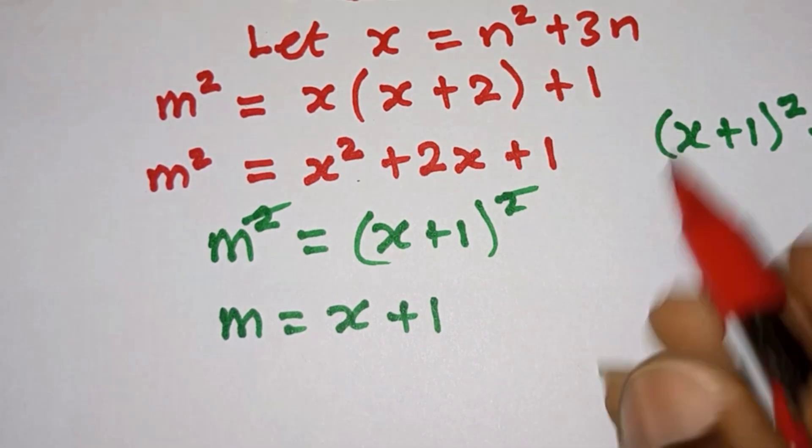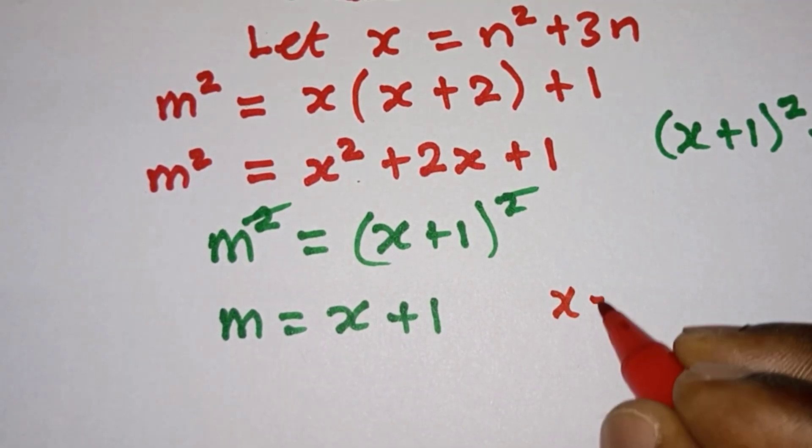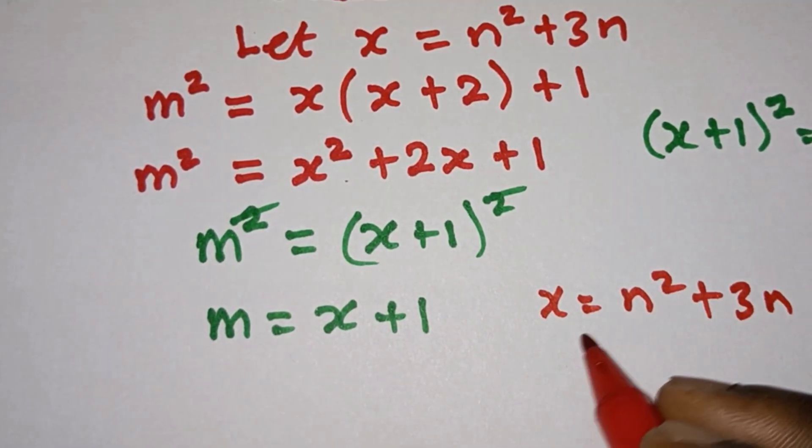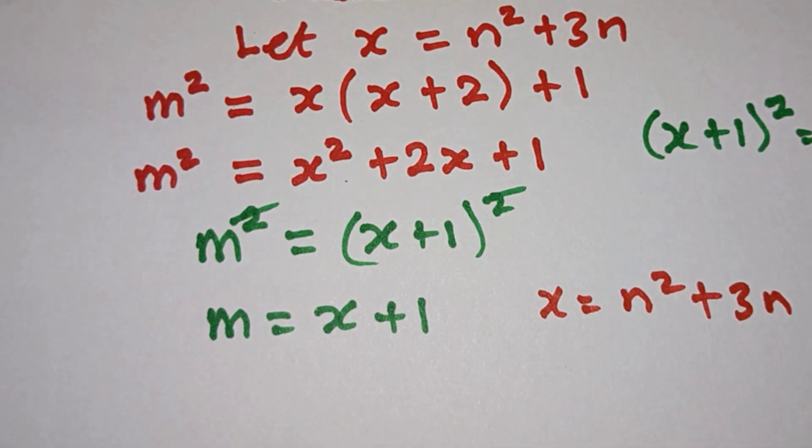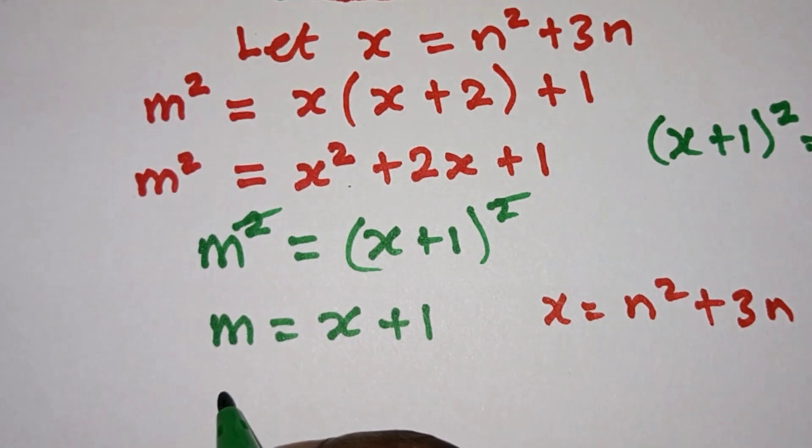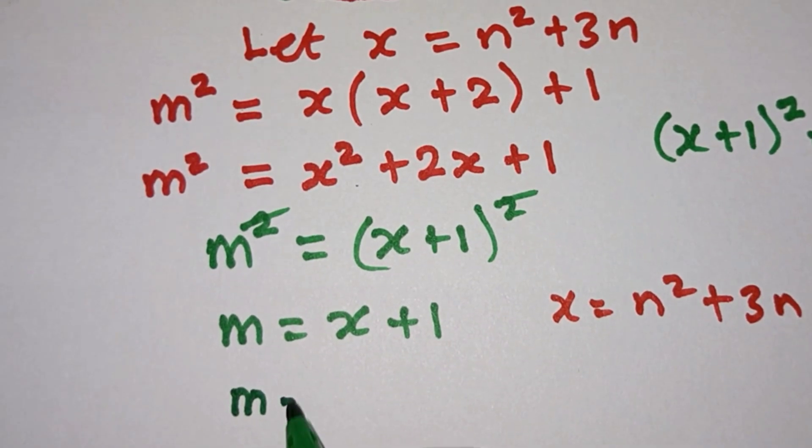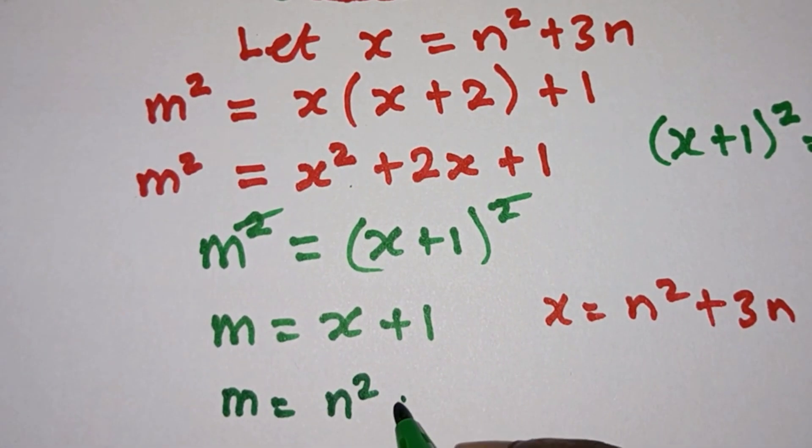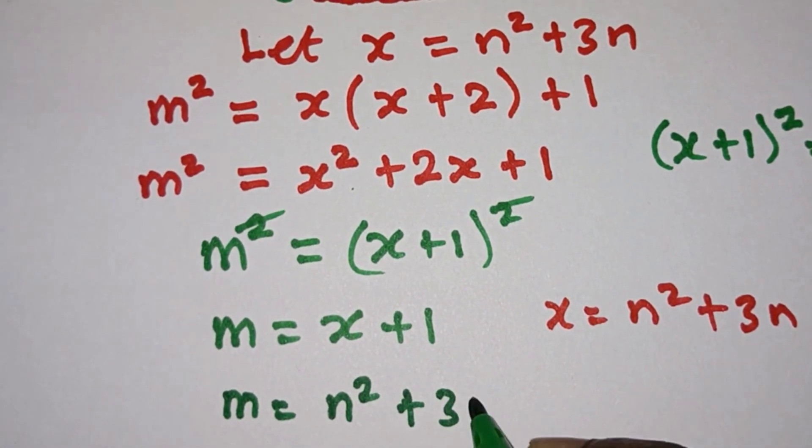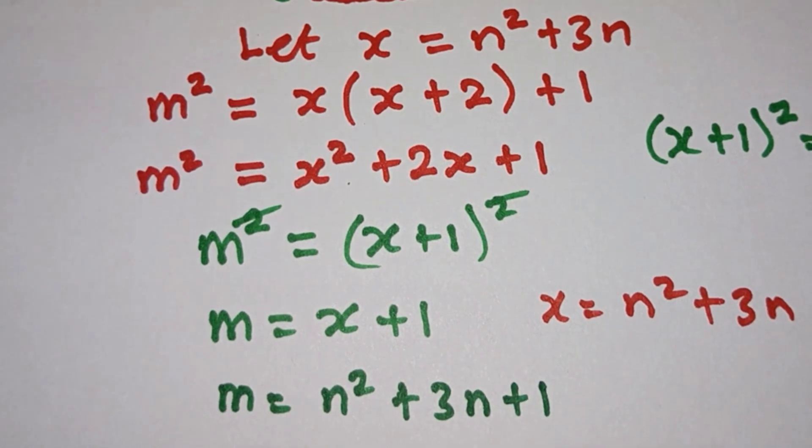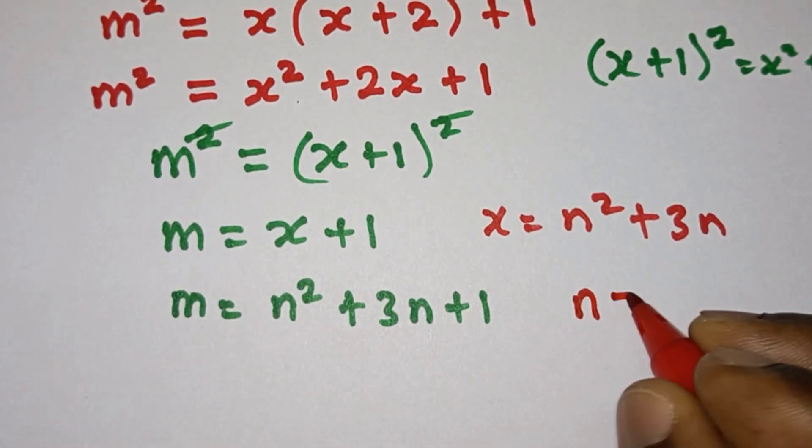From here we have x = n² + 3n, so let's put this one back. So we're gonna have m = n² + 3n + 1, and again we let n equal 99.